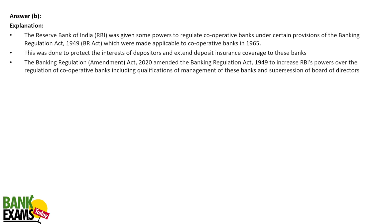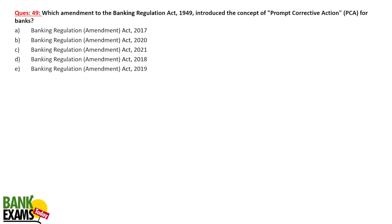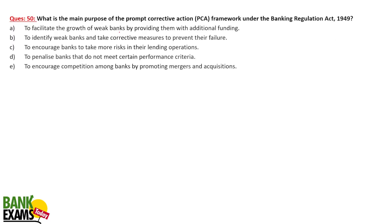Urban cooperative banks are now under RBI guidelines. The maximum penalty RBI can impose under Section 47A of the Banking Regulation Act is 10 crore rupees — that is the maximum penalty RBI can levy on any regulated entity. Regarding which amendment introduced the concept of PCA (Prompt Corrective Action) — the correct answer is the Banking Regulation Act Amendment Act 2017.